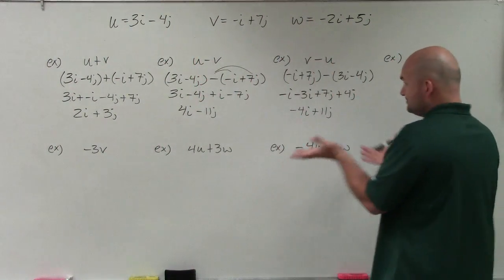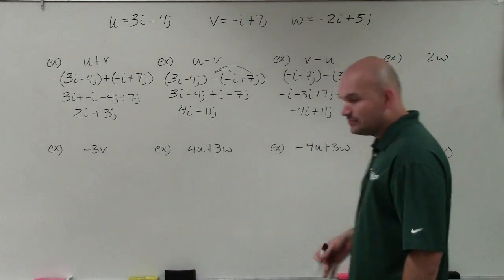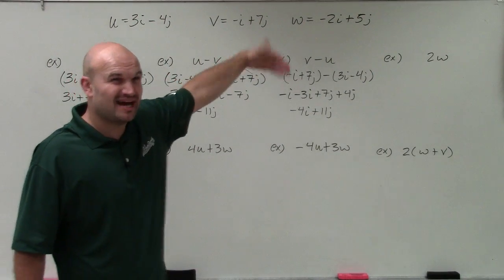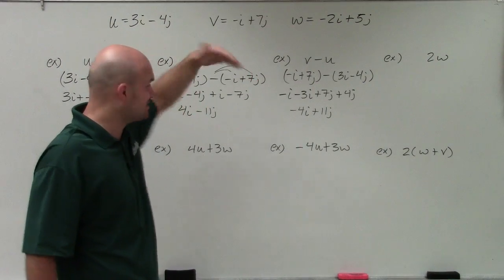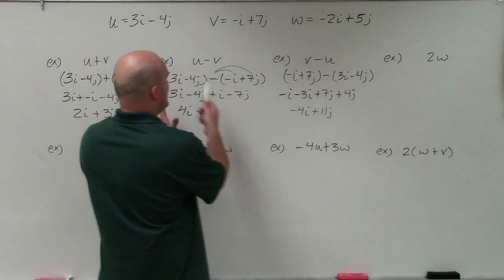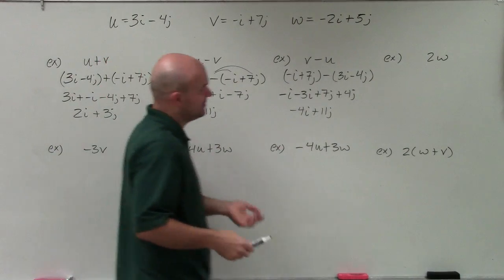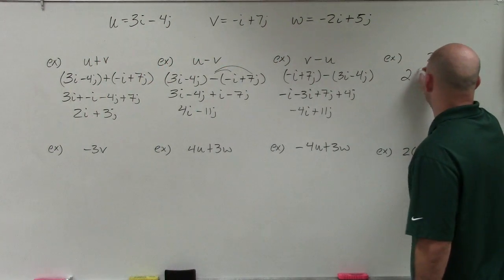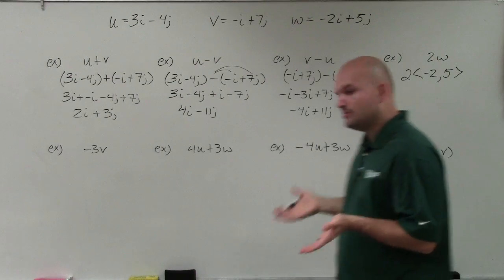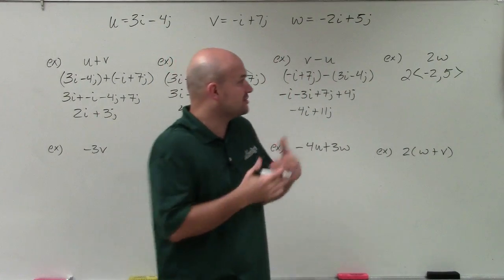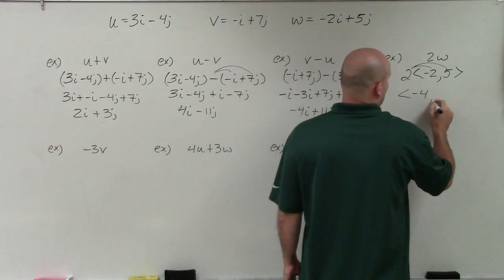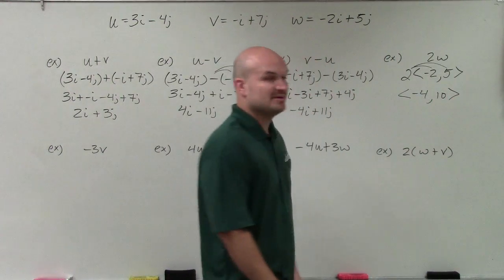You can see these results just kind of swapped signs. When dealing with a scalar, I prefer to write vectors in component form rather than as a linear combination. For 2w, I'll write w in component form as negative 2 and 5. When you multiply a scalar, it's just like multiplying a number times an expression — distribute the 2 to both terms. So I get negative 4 comma 10 as my resultant vector, which can be rewritten as negative 4i plus 10j.